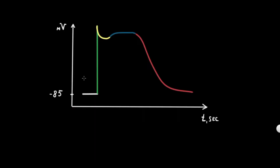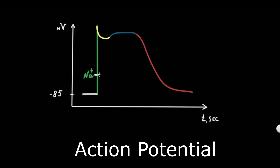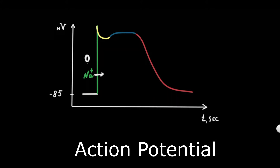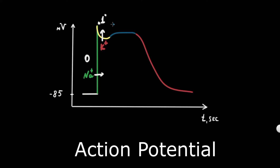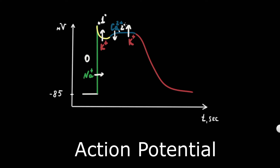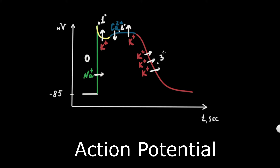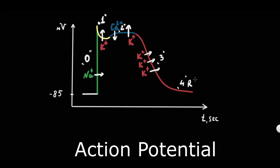Looking at the action potential of the ventricular conduction system, there are five phases related to ion currents. Phase 0 is rapid upstroke and depolarization due to opening of voltage-gated sodium channels. Phase 1 is initial repolarization represented by inactivation of voltage-gated sodium channels and activation of voltage-gated potassium channels. Phase 2 is plateau related to calcium influx through calcium channels and potassium efflux. Phase 3 is rapid repolarization represented by massive potassium efflux due to opening of voltage-gated potassium channels and closure of voltage-gated calcium channels. Phase 4 is resting potential.